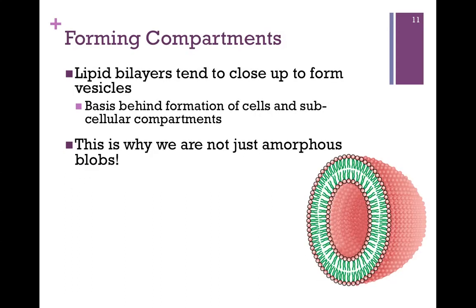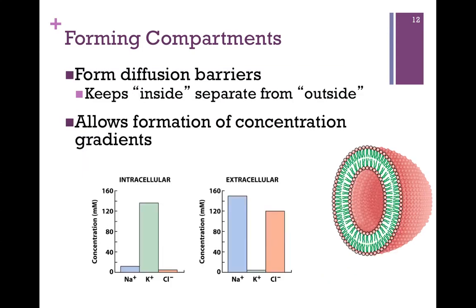This allows us to form sealed compartments — whether the cell, the external part of the cell, or the subcellular compartments. This is why we're not amorphous blobs — we can form distinct cells and have a difference between inside versus outside.